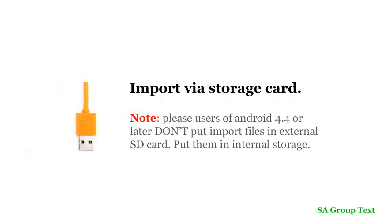To import from storage, you need to connect your phone with your PC or Mac using a USB cable and copy your files to your phone. One thing to note is that users of Android 4.4 or later need to put import files in your phone's internal storage. You can't keep them on an external SD card, because third-party applications may not be able to access it.